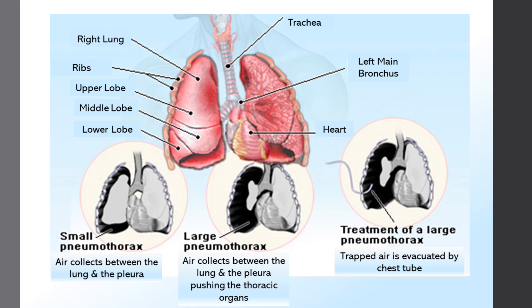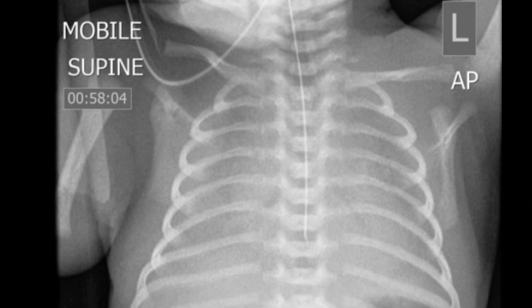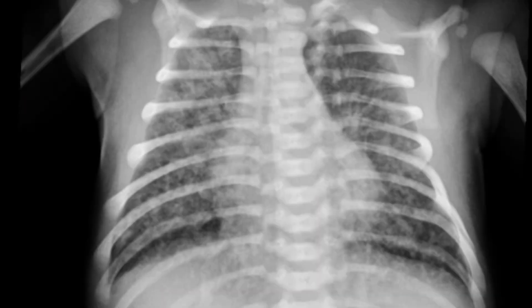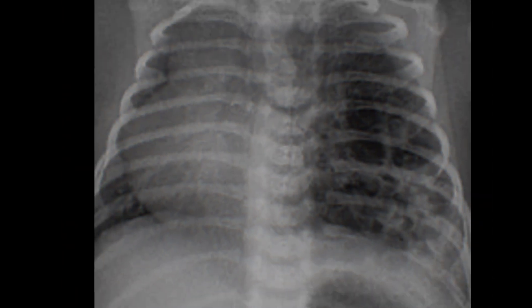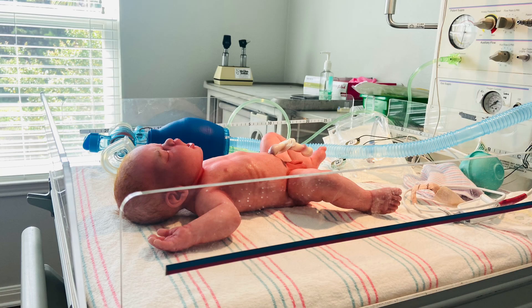Air leak, otherwise known as a pneumothorax, in the neonatal population can be a deadly situation. Neonates also have many risk factors that contribute to air leak. These include, but are not limited to, respiratory distress syndrome, mechanical ventilation, sepsis, pneumonia, aspiration of meconium, blood or amniotic fluid, or a congenital malformation. In addition, spontaneous pneumothoraces can occur in 1-2% of otherwise normal-appearing neonates.